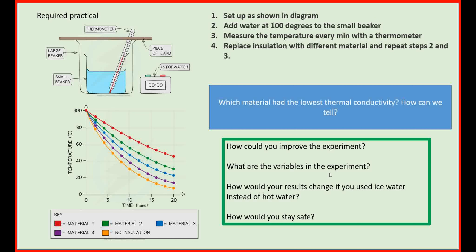The next required practical is about energy loss, temperature, and heating. A small beaker of hot water is placed inside a larger beaker coated with different insulating materials. We're comparing thermal conductivity of different materials. A thermometer measures the temperature change and a stopwatch measures time. Write down which material had the lowest thermal conductivity and how you can tell from the graph. Also consider how to improve the experiment, what the variables are, what would happen using cold water instead, and what the hazards are.